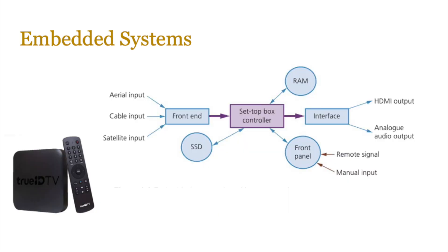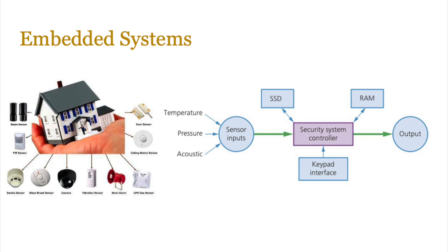On screen you have a media controller — something like Apple TV. It will have a front end allowing you to plug in your aerial, other cables, satellite, or fiber cable. It will have a set-top box controller, probably with an SSD to record video or shows, and a front panel where remote signal or manual button input is entered. It will have RAM, a user interface for interaction via an HDMI output, and an analog audio output if you want to plug in your own speakers, plus software allowing the user to interact with it.